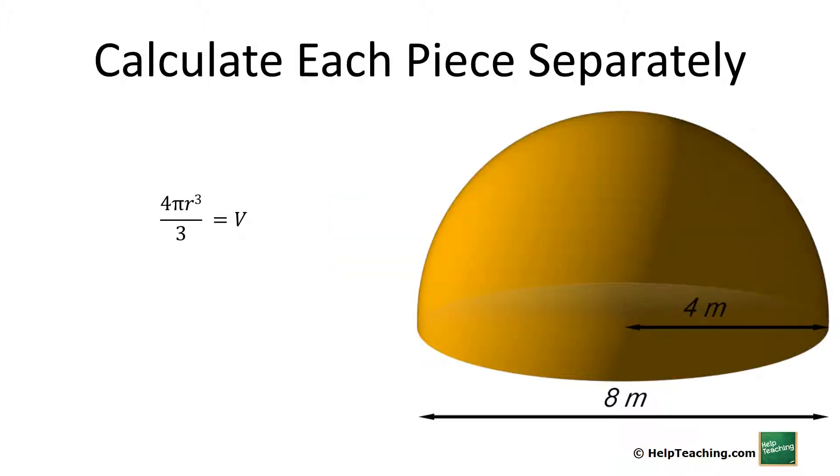Let's begin with the top. The formula for a sphere is 4/3 π r³, or 4π r³ divided by 3. We know the diameter is 8 meters, so the radius is 4. We plug that in to get a volume of 268.08 cubic meters. Remember, we're only looking at half the sphere, so we divide by 2 to get 134.04 cubic meters.